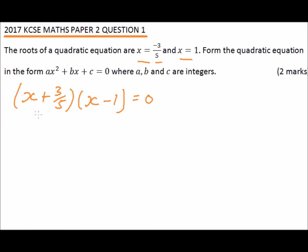We multiply this. Now multiply x multiplied by x will be x squared, then 3 over 5 times minus 1 will give us minus 3 over 5 equals 0.